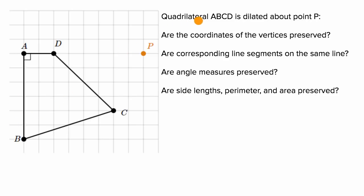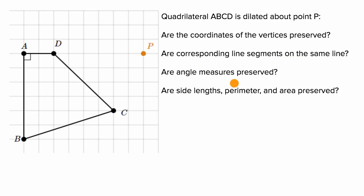We're told that quadrilateral ABCD is dilated about point P. This is our quadrilateral that's going to be dilated around point P. They ask us some questions: Are the coordinates of the vertices preserved? Are corresponding line segments on the same line? Are angle measures preserved? Are side lengths, perimeter, and area preserved?